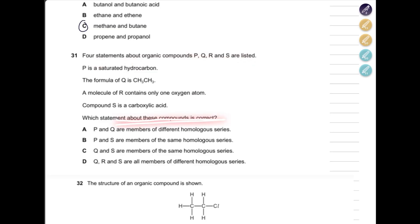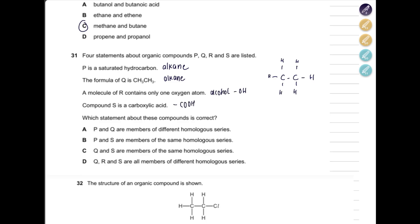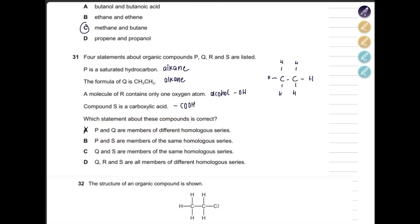Next: four statements about organic compounds P, Q, R, and S are listed and you have to say which statement is correct. P is a saturated hydrocarbon — that's an alkane. Q has the formula CH₃CH₃ — also an alkane. R contains only one oxygen atom — that would be an alcohol with an OH group. S is a carboxylic acid.